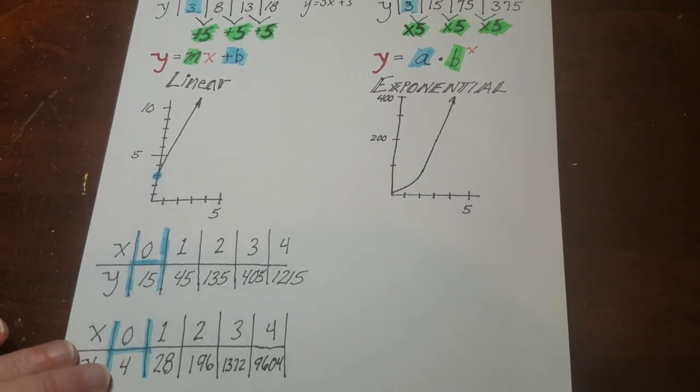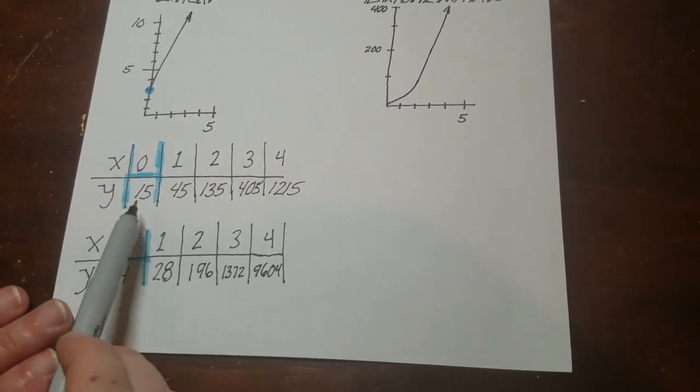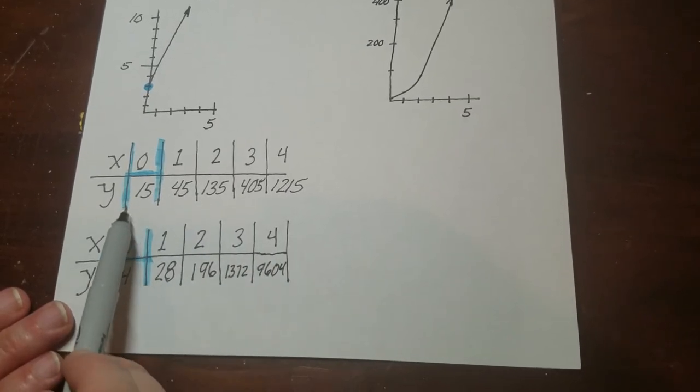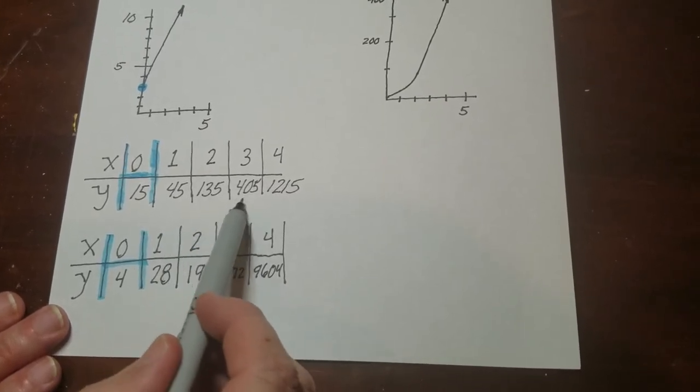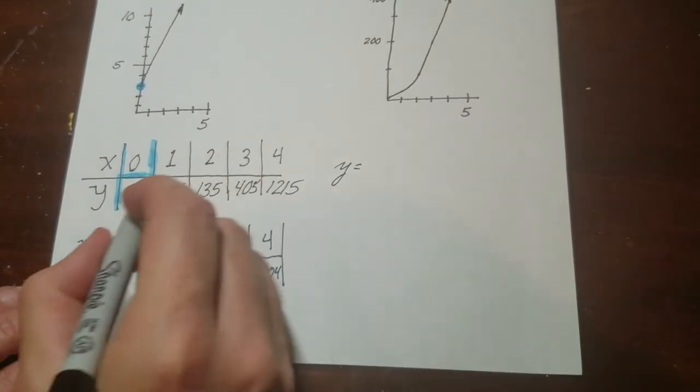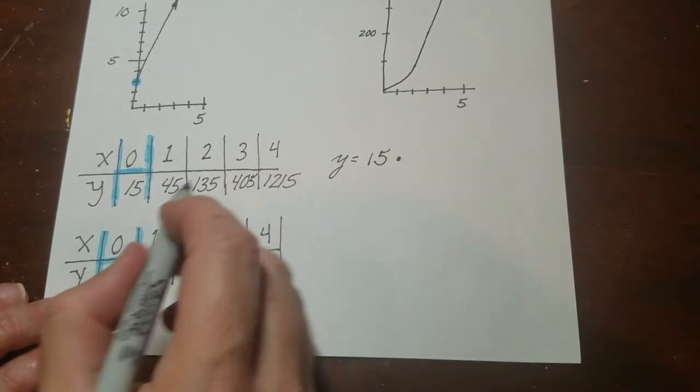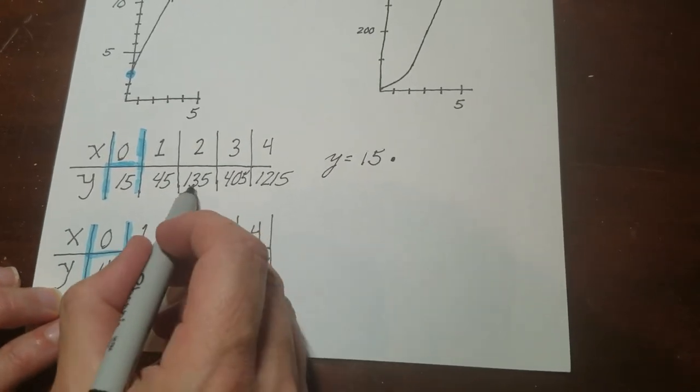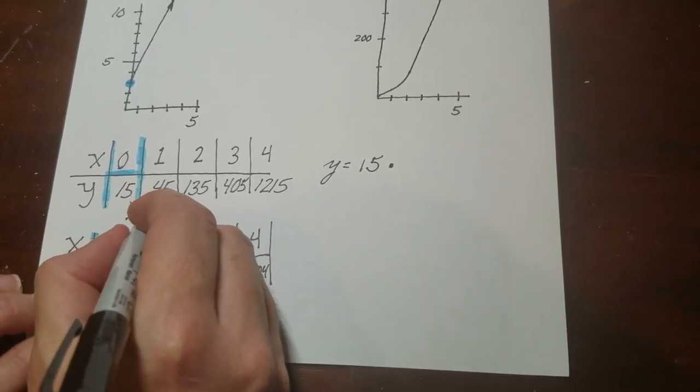So I'm going to go ahead and use what I just talked about to figure out the rules to these two tables down here. So when I look at this, I could tell 15, 45, 135, I'm definitely going up. I'm definitely not adding by the same amount because there's quite a big jump from 45 to 135 and from 135 to 405. So I know this is exponential. So I know that it starts off here at 15. That's the initial value. And then from 15 to 45, if I divide 45 by 15, I'm going to get 3. If I divide 135 by 45, I'm going to get 3 again. So this is actually multiplying by 3 every single time.